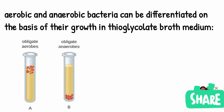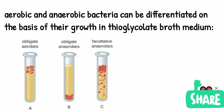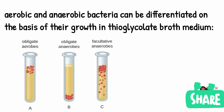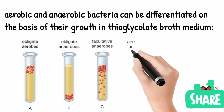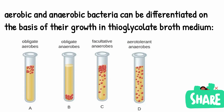Then we have facultative anaerobes. They will grow much more at the top of the test tube than at the bottom, so they are much more accumulated at the top. Then we have aerotolerant anaerobes, which will grow throughout the test tube because they are not affected by oxygen concentration.